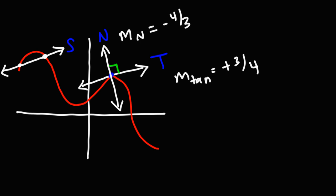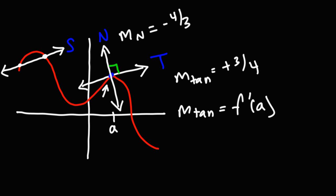Now, the way in which you would calculate the slope of the tangent line, you could find it by evaluating the first derivative at whatever point this is. So let's say if that point has an x-value of a, it will be the evaluation of the derivative at point a. That'll give you the slope of the tangent line, which is the instantaneous rate of change of that curve at that point.